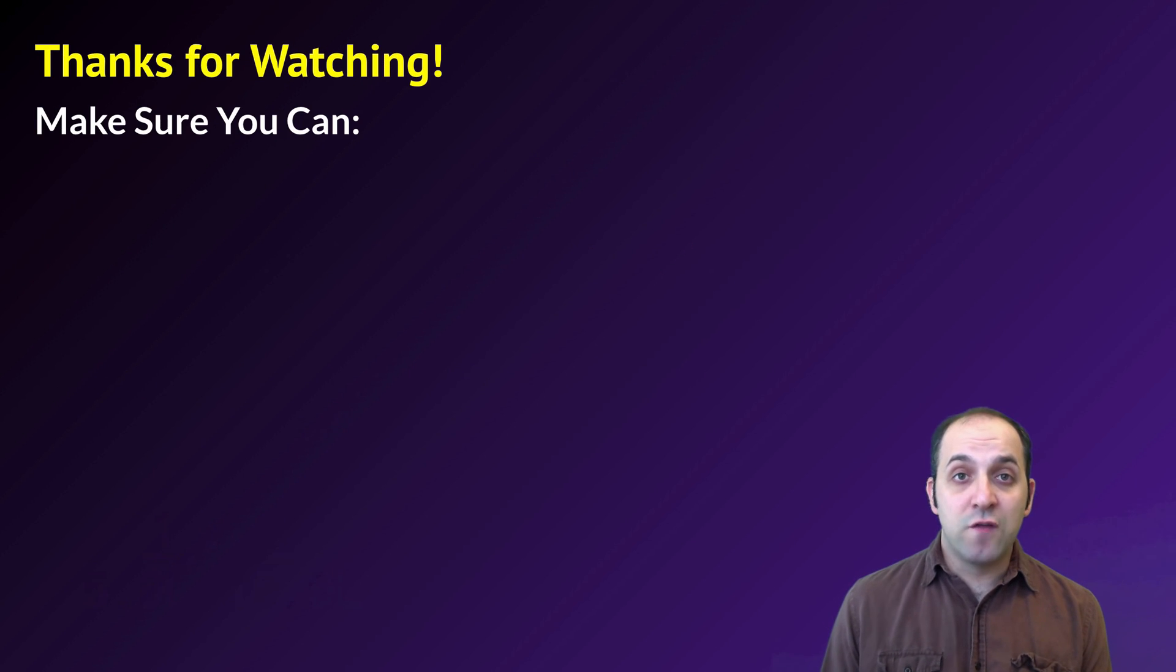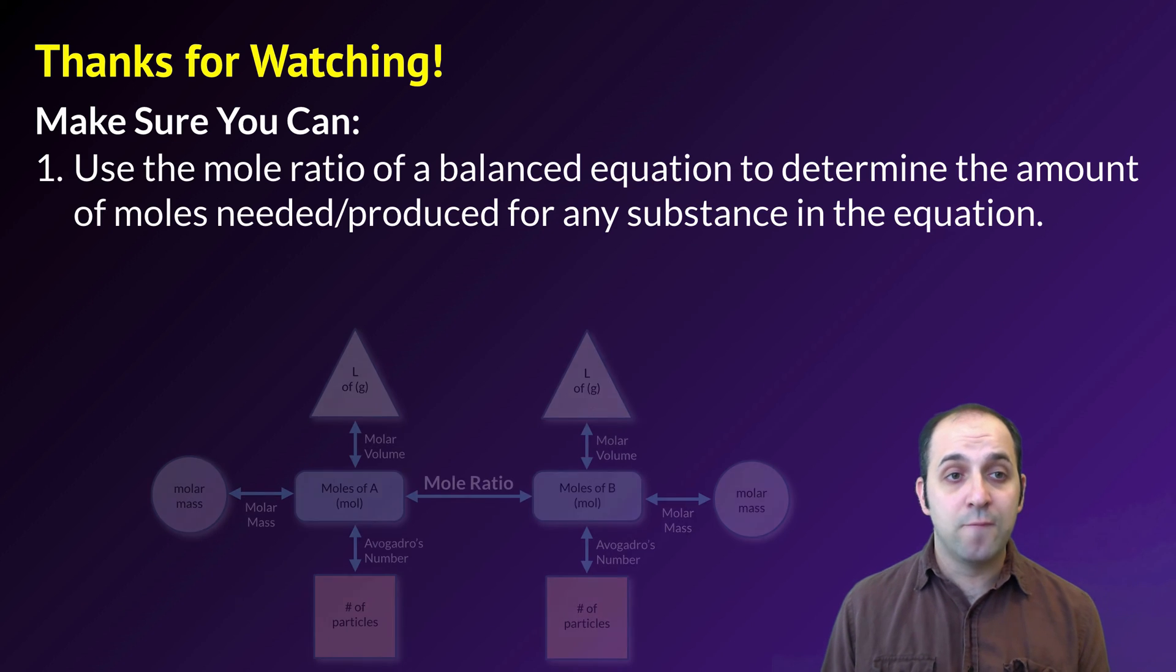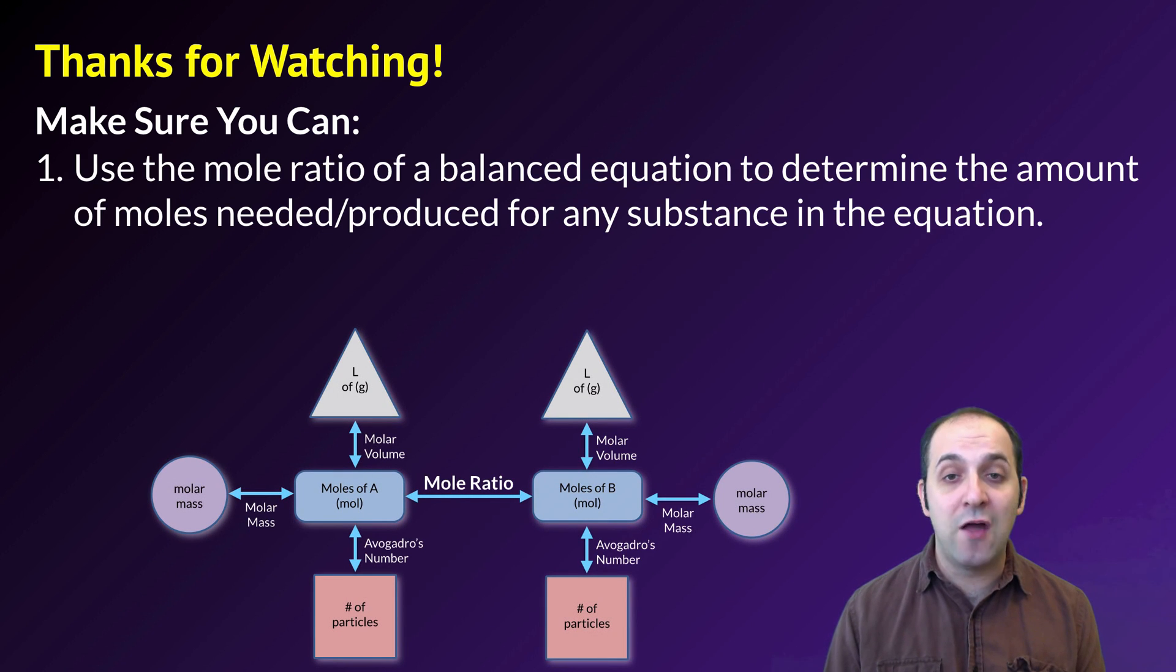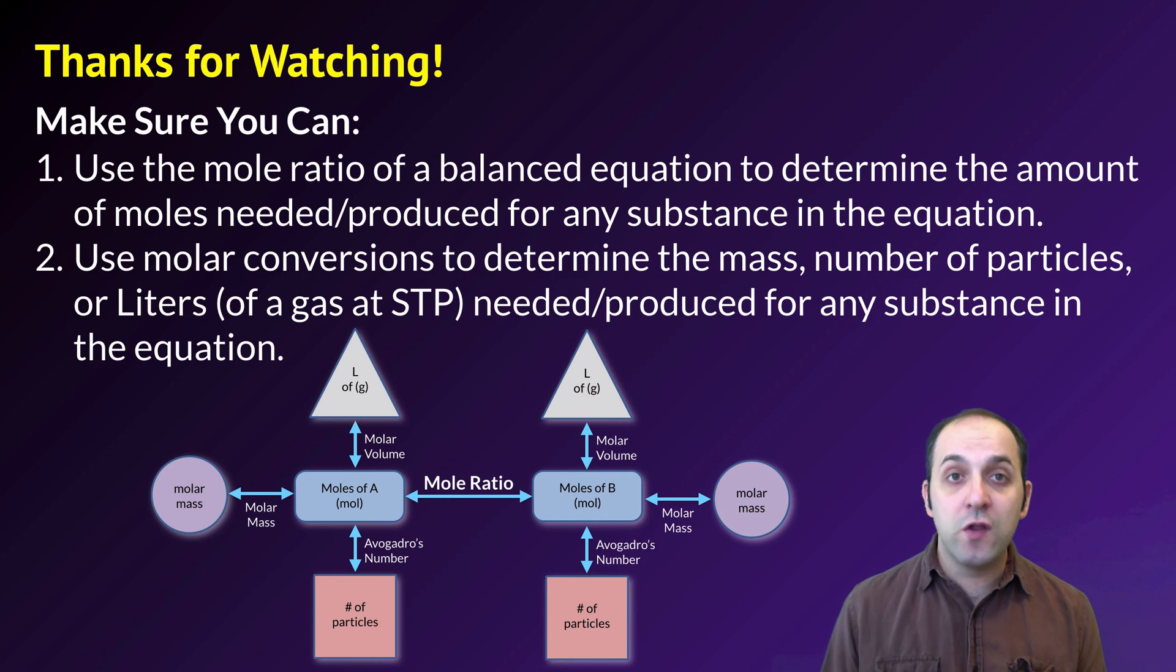Thanks so much for watching our discussion of chemical equation stoichiometry. Make sure you can do the following things here at the end. Make sure that you can use the mole ratio of a balanced equation to determine the amount of moles needed or produced for any substance in the equation. Also make sure that you can use molar conversions to determine the mass, number of particles, or liters of a gas at STP needed and produced for any substance in any chemical equation.